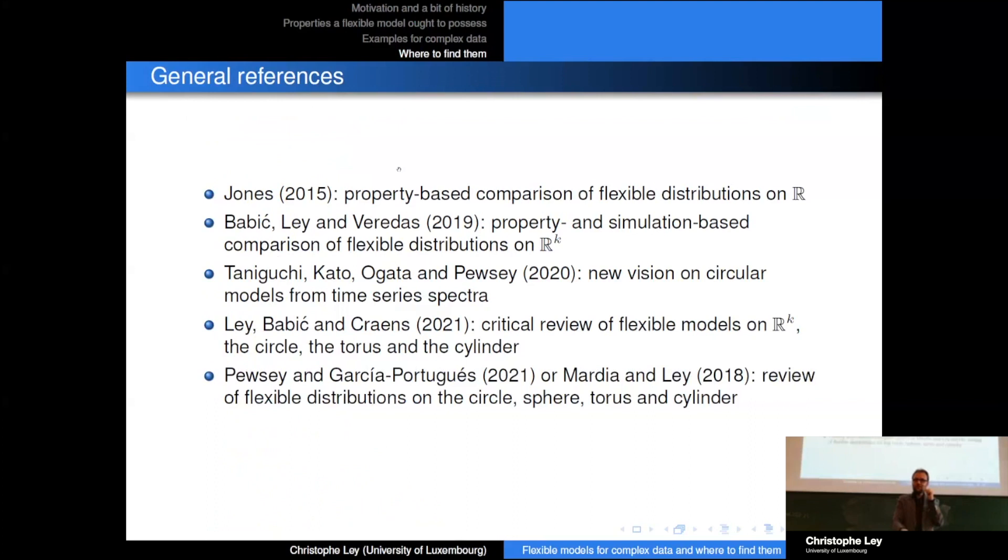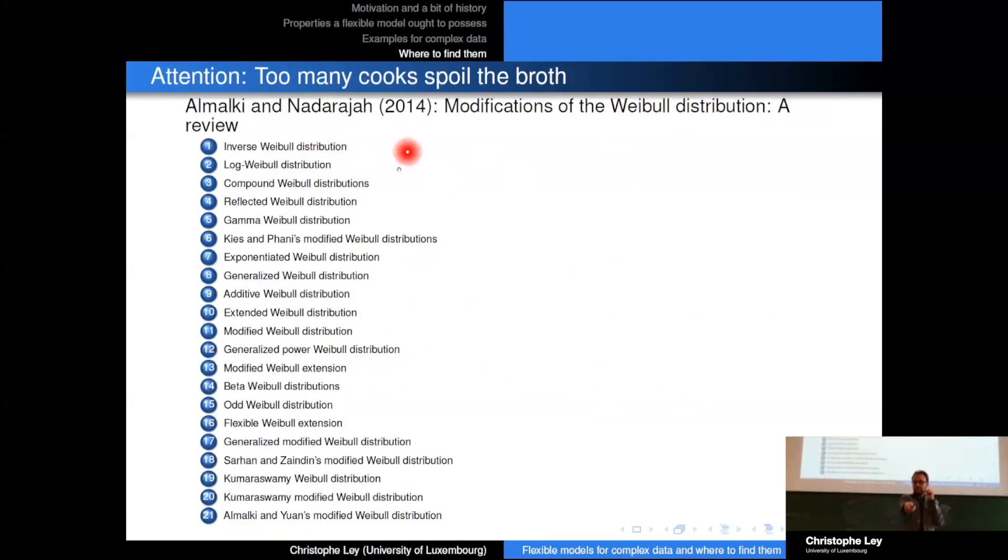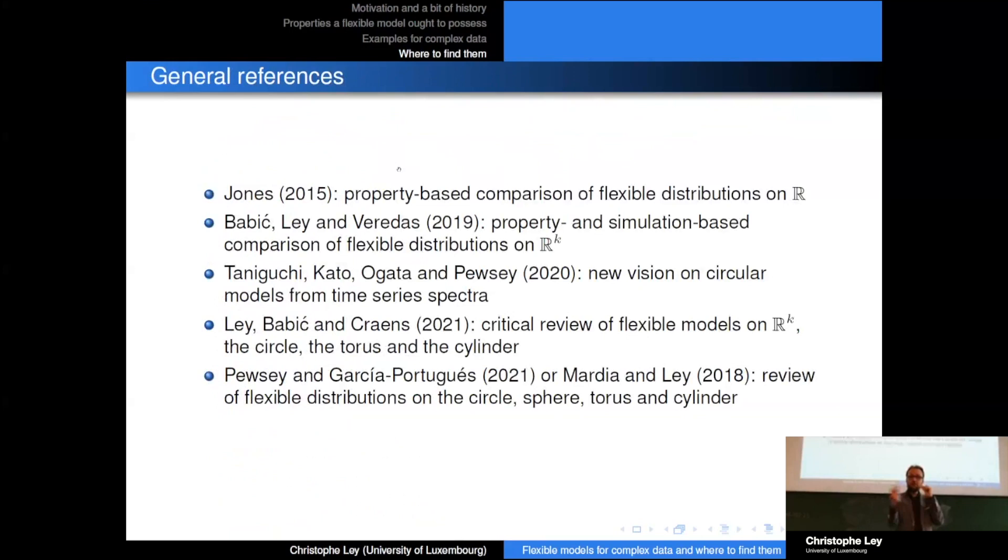So in order to not get lost, there is this. If you're interested in the Weibull, then I definitely recommend this paper, which is a nice paper to get an overview. And general references, I indicate those here. There is a very nice paper by Chris Jones in the International Statistical Review where he makes a property-based comparison of flexible models on ℝ. With my PhD students Sladyana and David Veredas, we have tried to mimic this in the multivariate case, so to also make a property- and simulation-based comparison of flexible distributions. Then, well, yesterday we have seen the talk by Masanobu where they have proposed a new vision on circular models that comes from time series, where you also get a very general construction and can get many distributions.